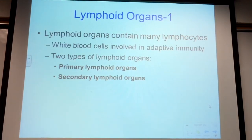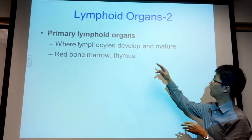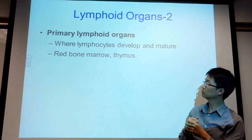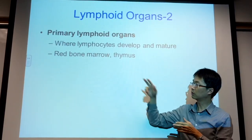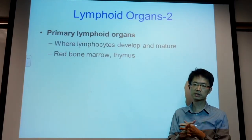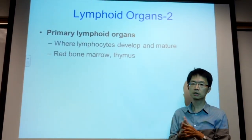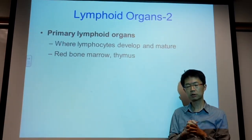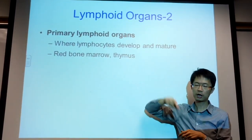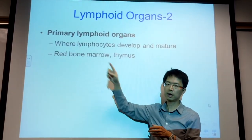There are two types of lymphoid organs: primary and secondary. The primary lymphoid organs are mainly bone marrow and thymus. Bone marrow is where most blood cells and lymphocytes are made. Thymus is for one particular lymphocyte — the T cell. T cells are made in bone marrow and mature in thymus, while B cells are made in and mature in bone marrow.